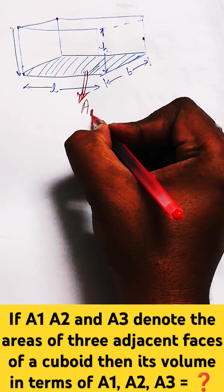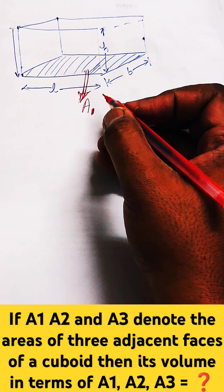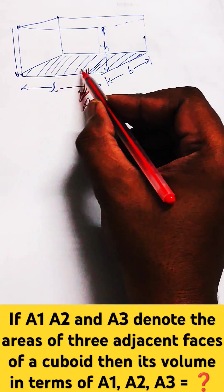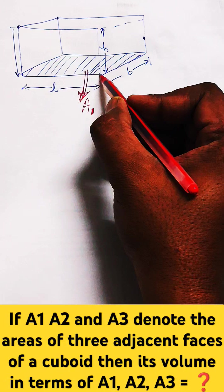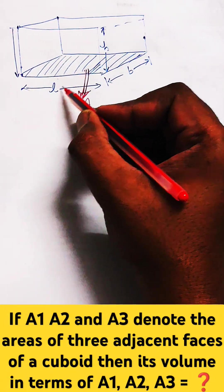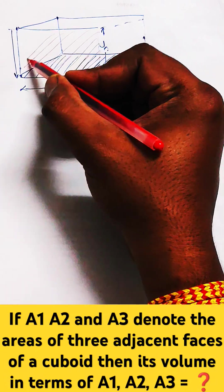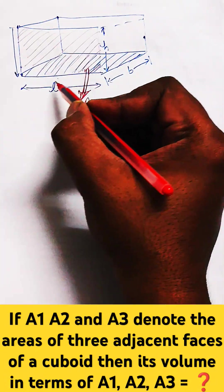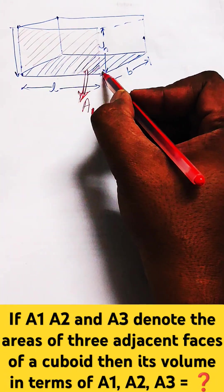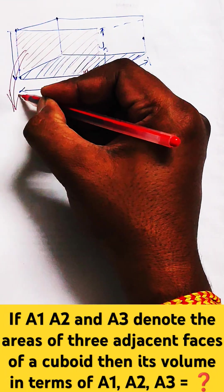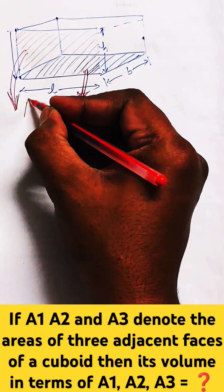This is given into the question because if A1, A2, A3 denote the areas of three adjacent faces, you can see this is one of the face and adjacent to it will be equal to L into H, this one. You can see another triangle is formed whose dimension is L into H and if the area of this second face is A2.